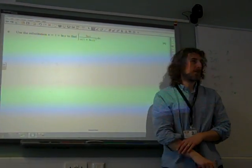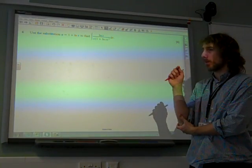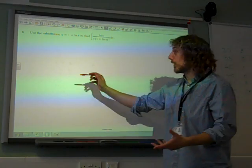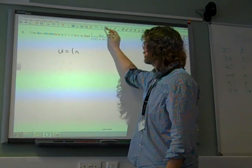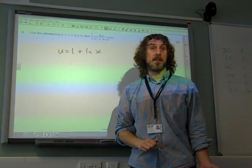Question six. Use the substitution U equals 1 plus LN X to find that. Right, we know our substitution works. If we're doing a substitution, the first thing that we're going to do is write it properly, is differentiate it. Because we need to replace the DX with DU.